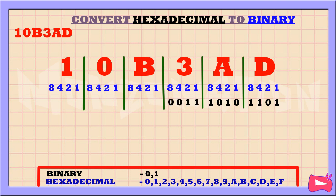3 is the sum of 2 and 1, so we're going to replace 2 and 1 with 1. We didn't use 8 and 4, so let's replace them with a 0.